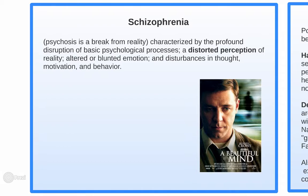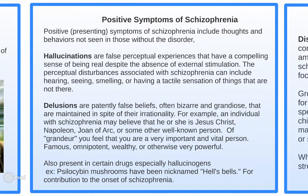Moving on to schizophrenia — our prototypical psychological disorder. It involves a disruption of basic psychological processes, a distorted perception of reality, altered or blunted emotion, and disturbances in thought, motivation, and behavior. The movie A Beautiful Mind involves a main character who suffers from schizophrenia. Positive symptoms of schizophrenia are those that are present in the patient but would not be present in a normal person.